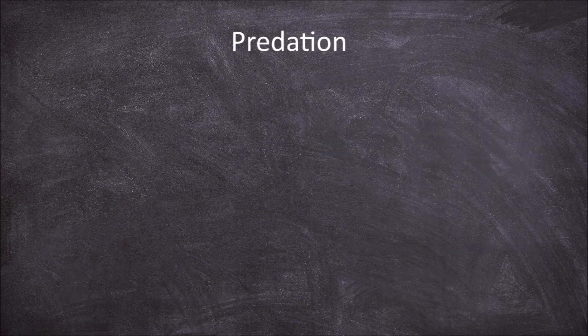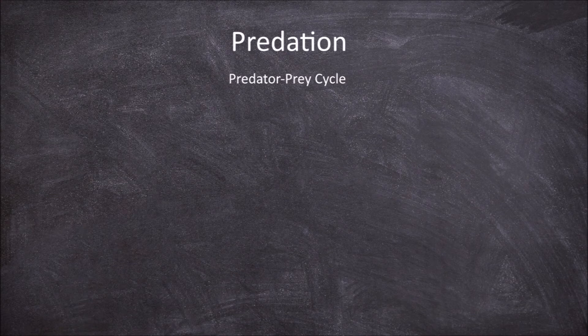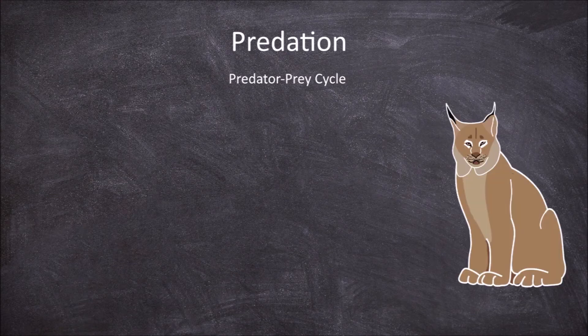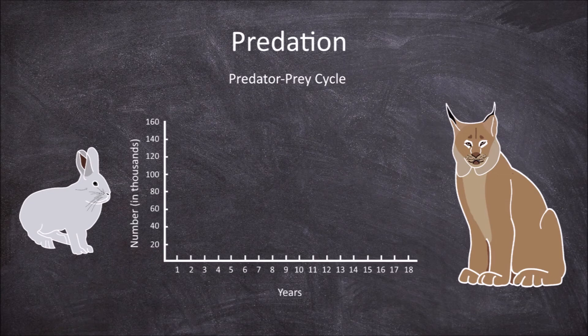The interaction between predator and prey also has an impact on the population sizes of both the predator and the prey, and creates what are called predator-prey cycles. An example of this can be seen if we go back to our example of the predator, the Canada lynx, and specifically its preferred prey, the snowshoe hare. The interaction between these two species affects the population size of each.